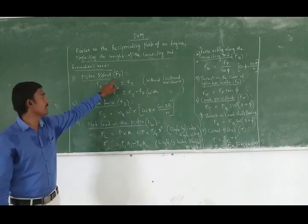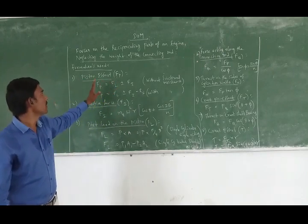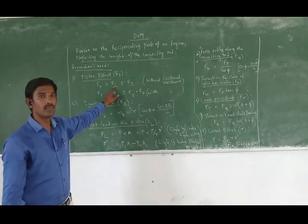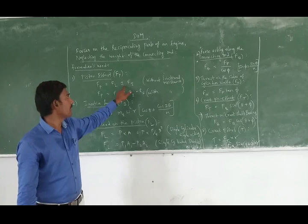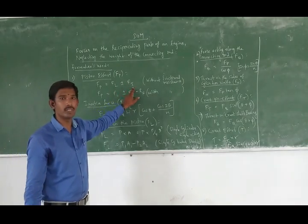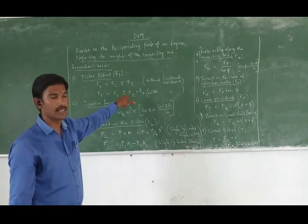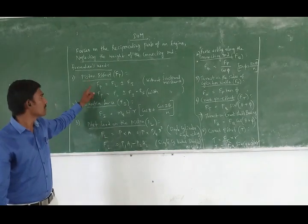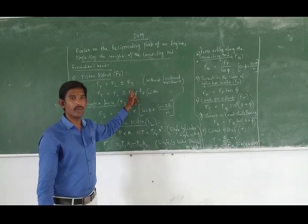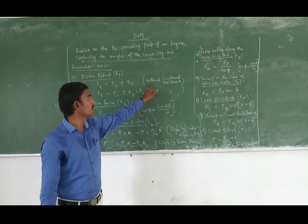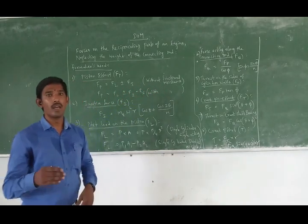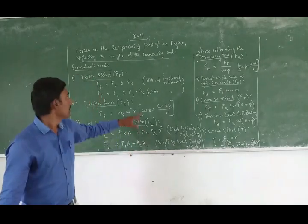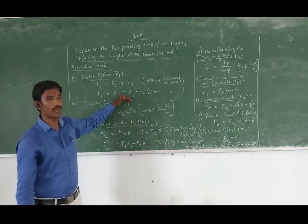So it is called F1. F1 is the piston effort level. F1 means dead load plus or minus FI — inertia force on the reciprocating engine. So FP equals F1 plus or minus FI. Here we go without friction resistance. Suppose the friction resistance is included.